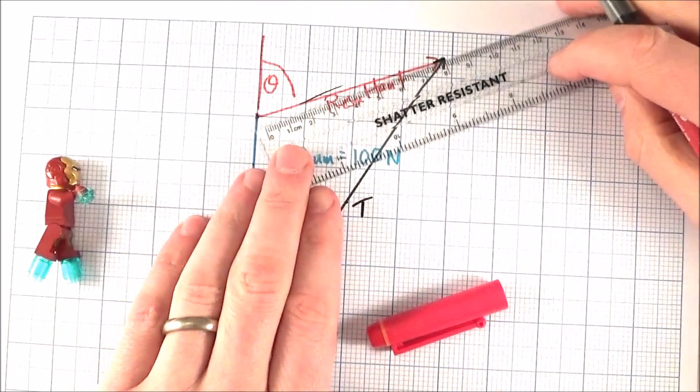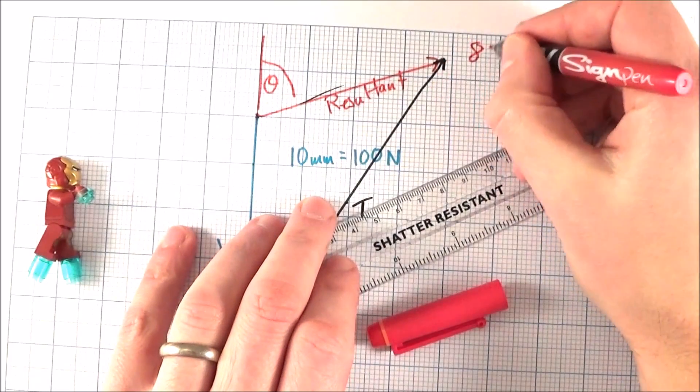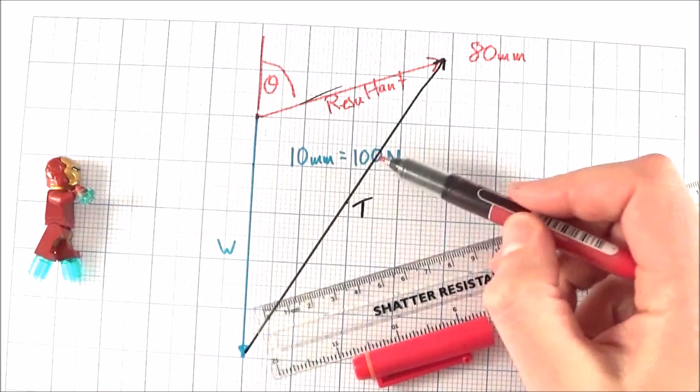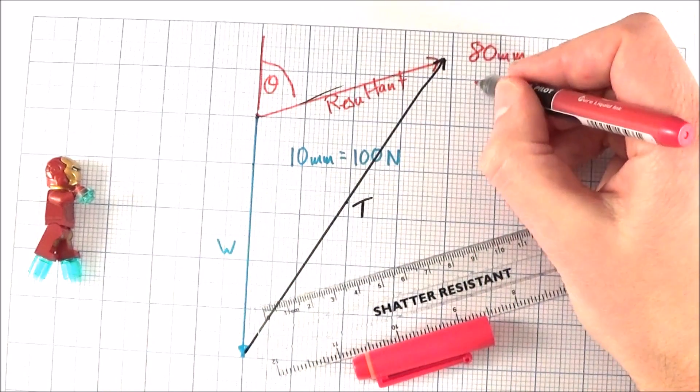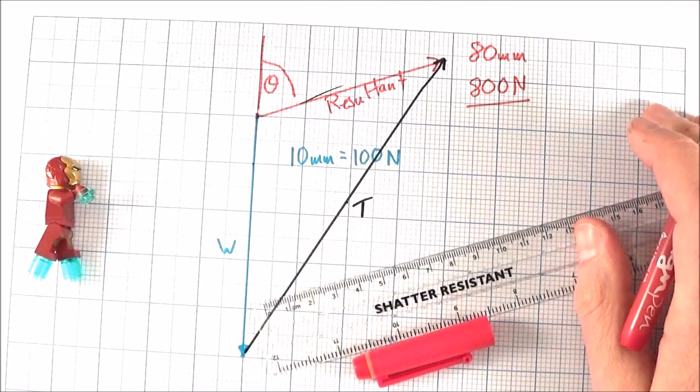So if I measure this, we get a value of 80 millimeters. 80 millimeters—well if 10 millimeters is 100, then 80 millimeters is going to be equal to 800 newtons. So I've got here the magnitude of that vector.